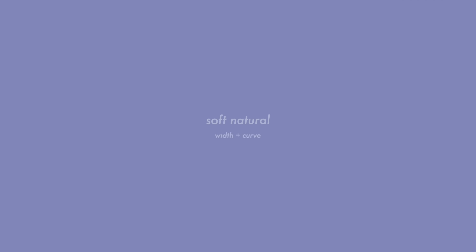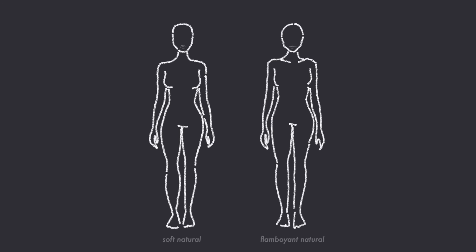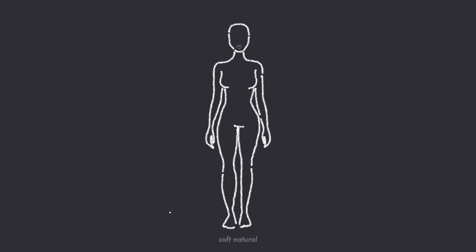Soft Natural: width and curve. If you have the soft natural body type, then your dominant features are width and curve. Similar to the flamboyant natural, the soft natural is frame dominant and bluntly angular. However, the soft natural's bone structure is less prominent overall, with a smaller difference in width between the shoulders and hips. Contrary to popular belief, soft naturals have a moderate vertical line and can actually be quite short — the natural family has the widest height range of all the body types. The soft natural usually has a defined waist and slightly curvy shape in the bust and torso. Her facial features are bluntly angular and slightly wide, yet moderate in scale, and can often appear quite classic.